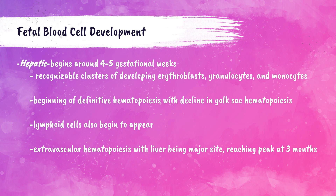The second stage of fetal blood cell development is called the hepatic phase. Hematopoiesis begins in the yolk sac, then transitions into the liver. The hepatic phase begins around four to five weeks after fertilization, with hematopoiesis in the yolk sac beginning to decline as the liver takes over, reaching its peak at around three months of gestation.